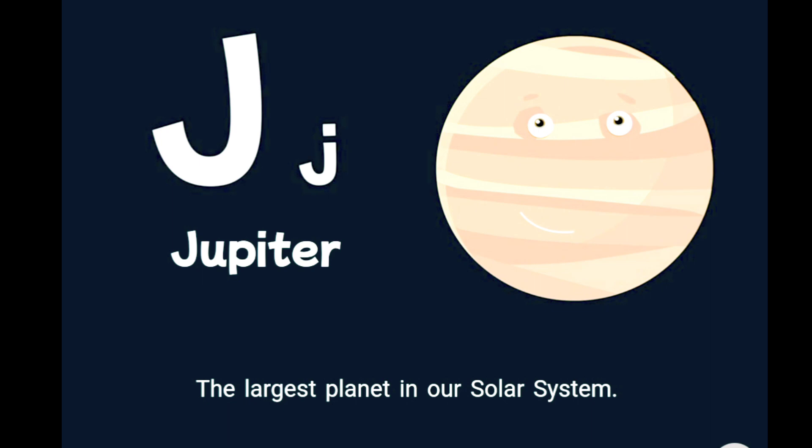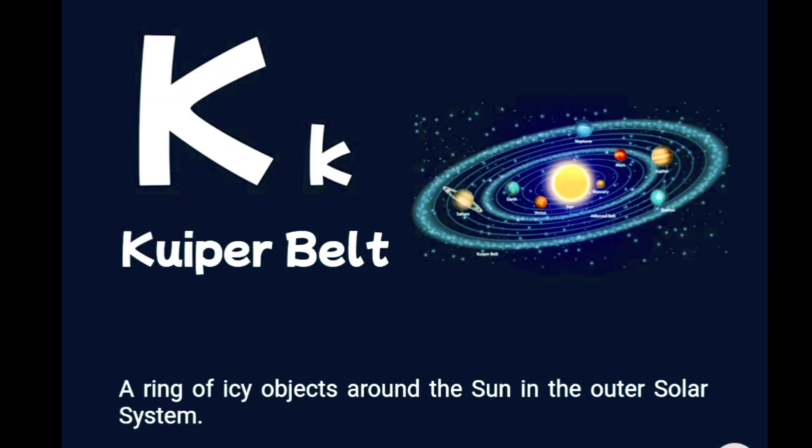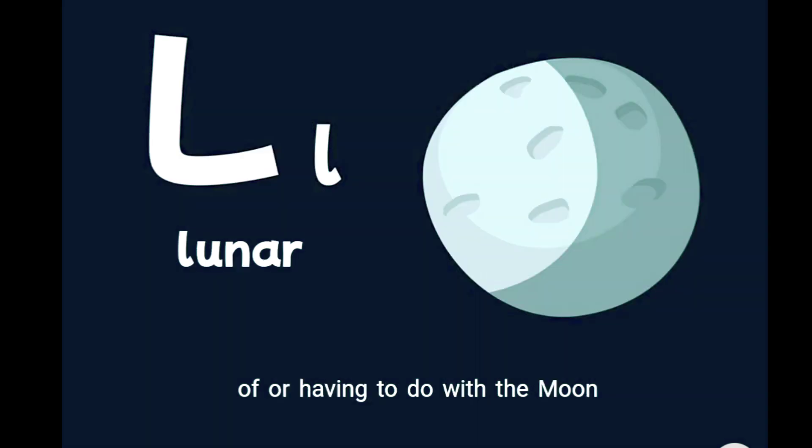K is for Kuiper Belt, a ring of icy objects around the sun in the outer solar system. L is for lunar, of or having to do with the moon.